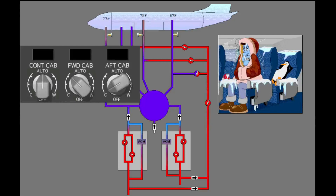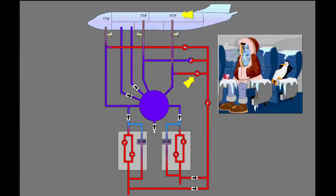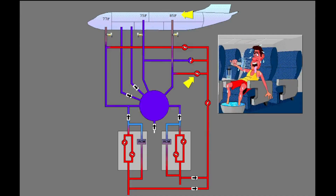Selecting a warmer temperature in the aft cabin causes the aft cabin temperature trim air valve to open to allow warm air to the aft cabin. Because the forward cabin is the coldest zone, the related trim air modulating valve closes and the packs supply air at the requested temperature of the forward cabin.